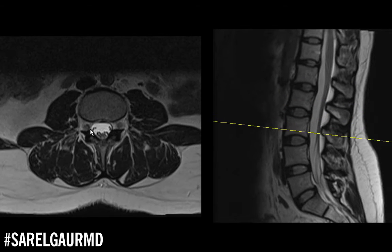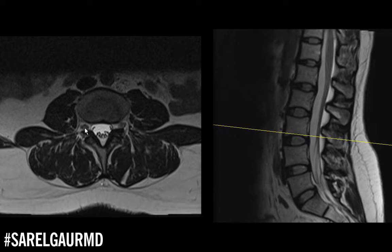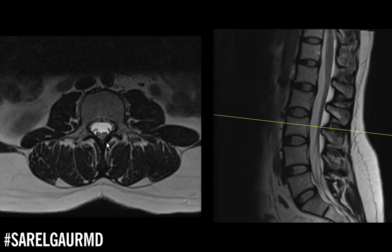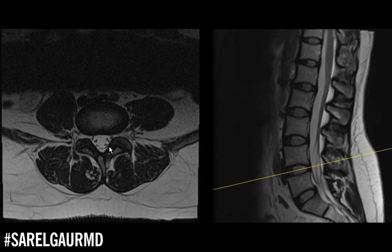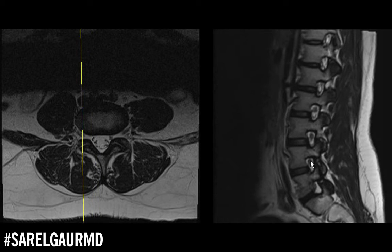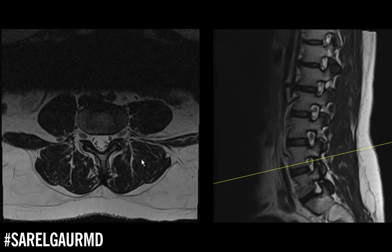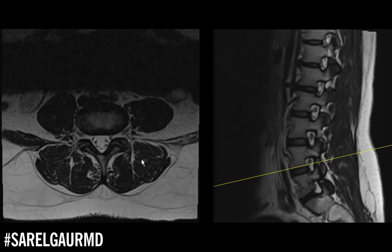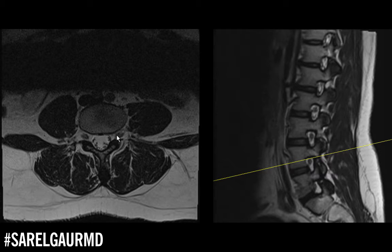These two nerve roots right here are going to combine and form this dark signal structure known as a spinal nerve. I'm here at the L4-L5 level, and I'm going to talk about how we name these nerves — there's a standard convention. I want to find the spinal nerve that's exiting at that level. On the sagittal, you can see the nerve actually exits slightly above the disc level, so I need to come up slightly to see it. Here's my nerve — this is the left spinal nerve in the neural canal.